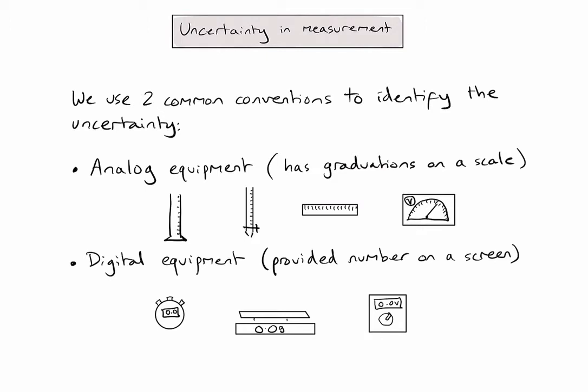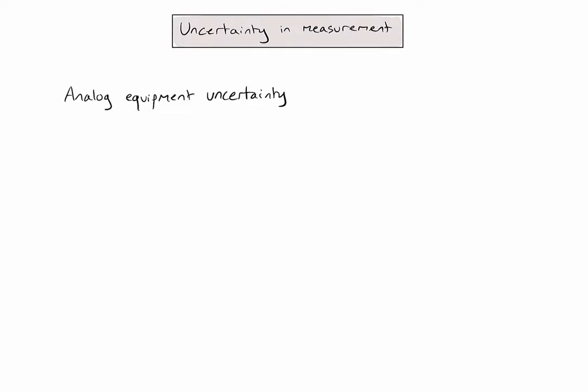Let's look at the conventions we use in each case. We'll start with analogue equipment. To find the uncertainty in analogue measurement equipment, we take plus or minus half of the smallest division.